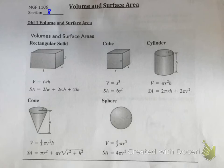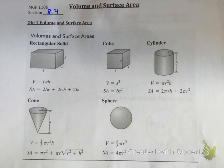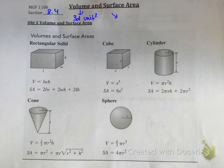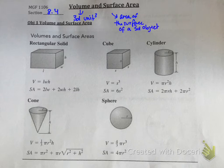This is section 8.4, and we're covering volume and surface area. As a reminder from the last section, we talked about perimeter and circumference — that's just measuring length. When we talk about area, we multiplied length by width, so the units were squared. Now we're talking about volume, which involves three-dimensional objects with cubic units, and we're also going to talk about surface area. Surface area is the area of the surface of a 3D object — we find the area of the faces and add them together. Volume is what's inside the object, whereas surface area is what's on the outside.